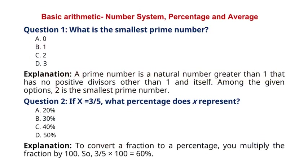Question 1. What is the smallest prime number? A. 0, B. 1, C. 2, D. 3. Explanation: A prime number is a natural number greater than 1 that has no positive divisors other than 1 and itself. Among the given options, 2 is the smallest prime number. So the correct answer to question 1 is option C. 2.